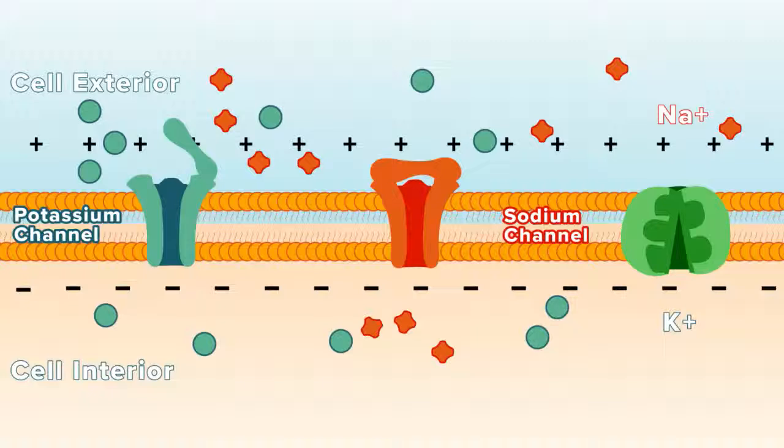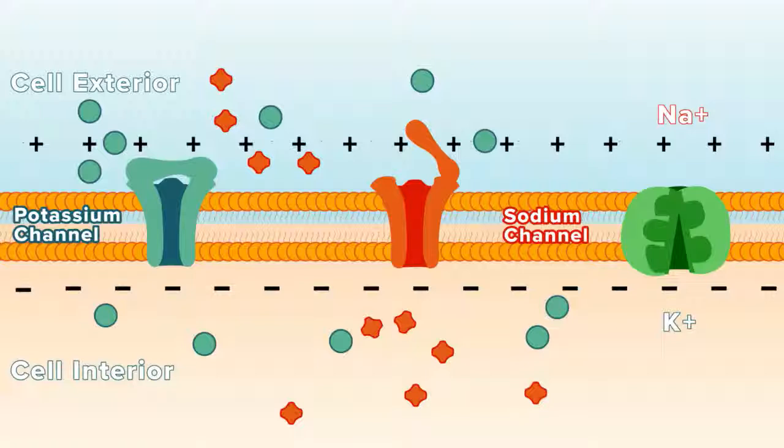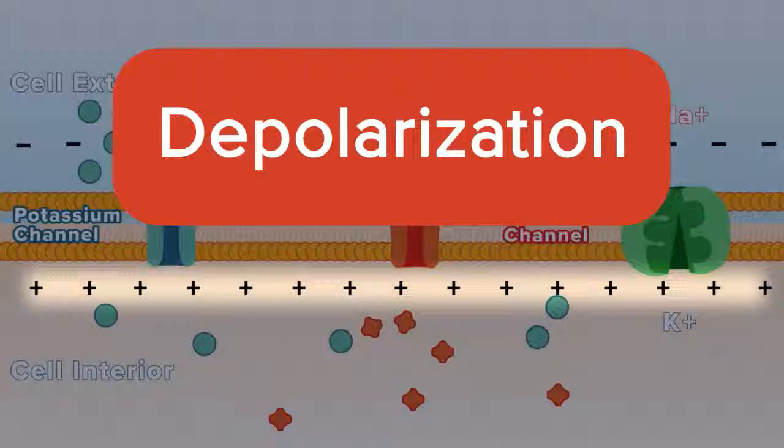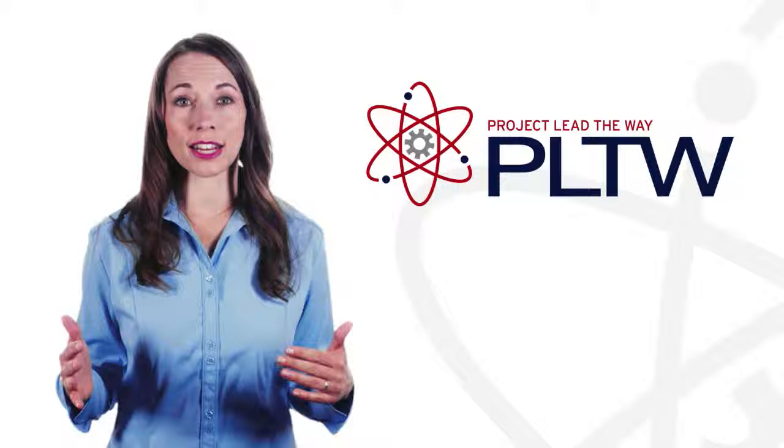When a neuron receives a signal, sodium channels along the membrane open while the potassium doors stay closed. When this happens, sodium begins rushing into the cell making the inside of the cell more positive. This change in charge is called depolarization and is what generates the electrical signal. As depolarization happens down the entire membrane of the neuron, the action potential propagates through the cell.